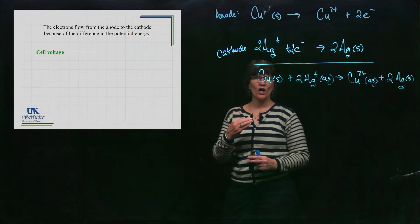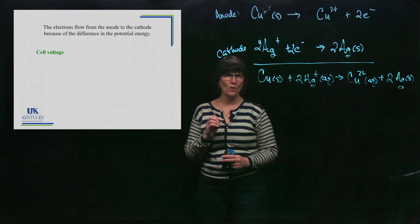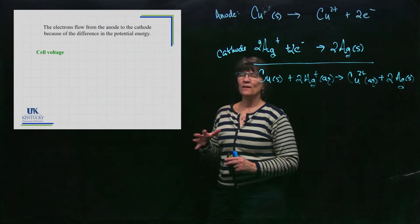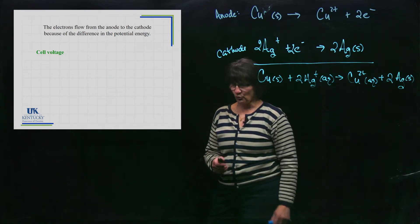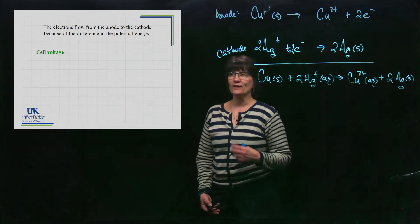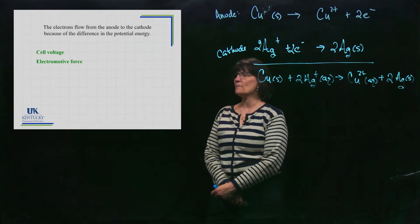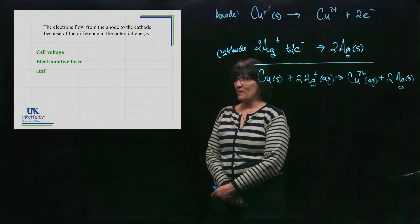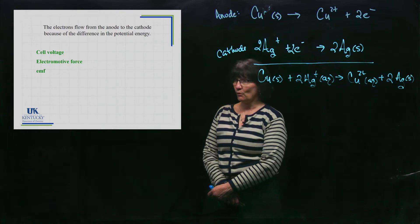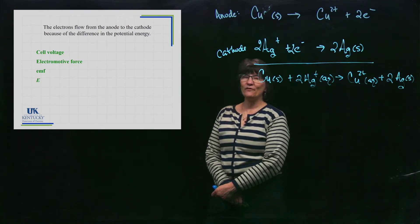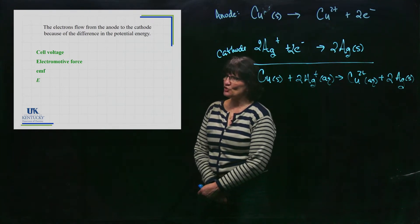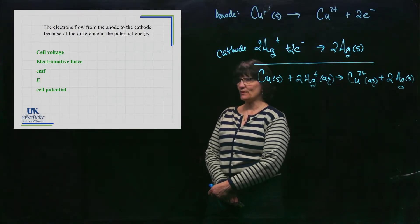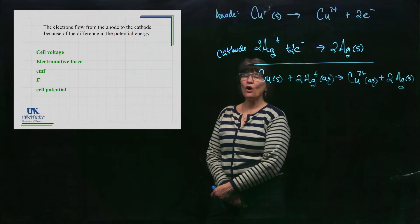When we talk about cell potential, there are many different terms you may encounter in other resources. It can be called cell voltage, electromotive force, abbreviated EMF, or abbreviated with the symbol E (usually italicized). I usually call it cell potential, but all of these terms mean the same thing.